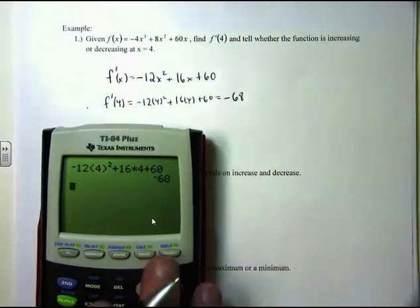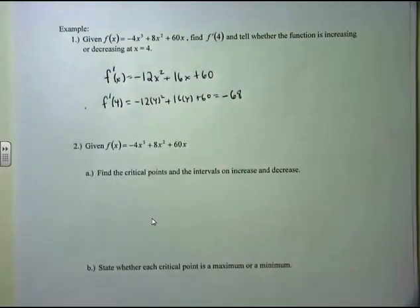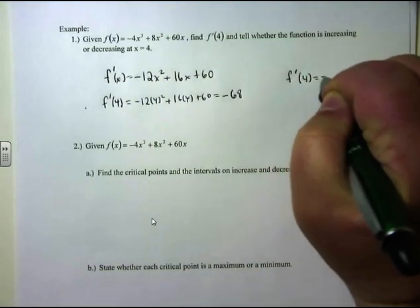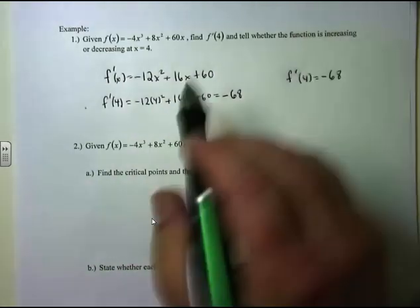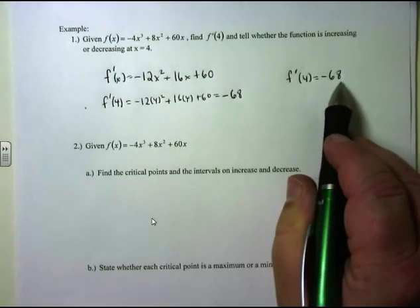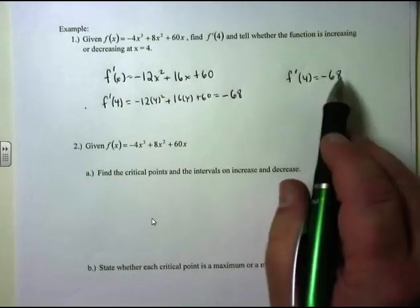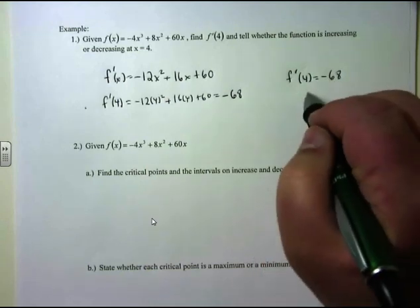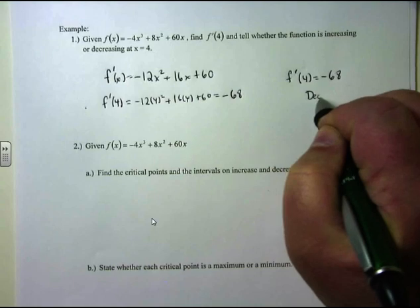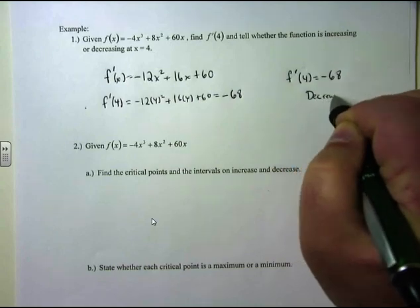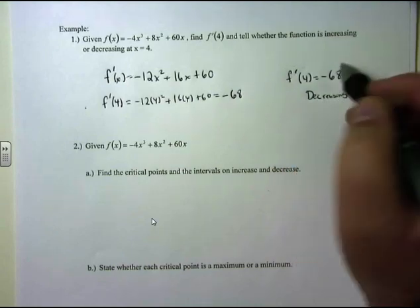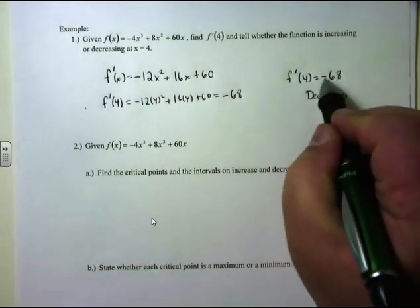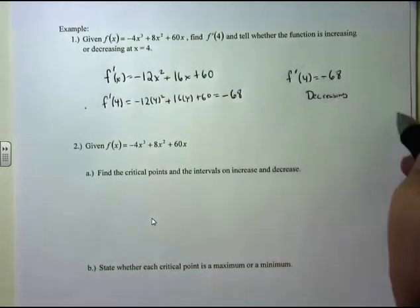Using my calculator: -12 times 4 squared plus 16 times 4 plus 60 gives me negative 68. So f'(4) = -68. Being that it's a negative slope — remember it's the slope of the tangent line — so we have a negative first derivative here. That means, being it's negative, the function is decreasing at x = 4.